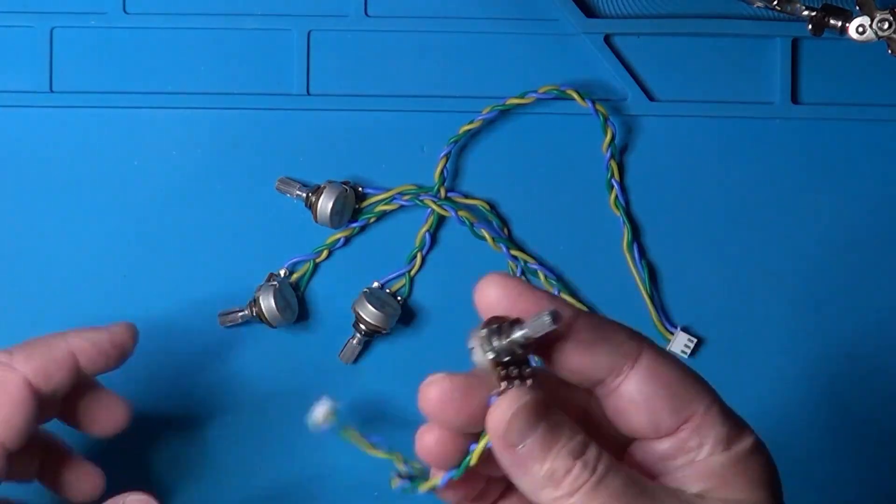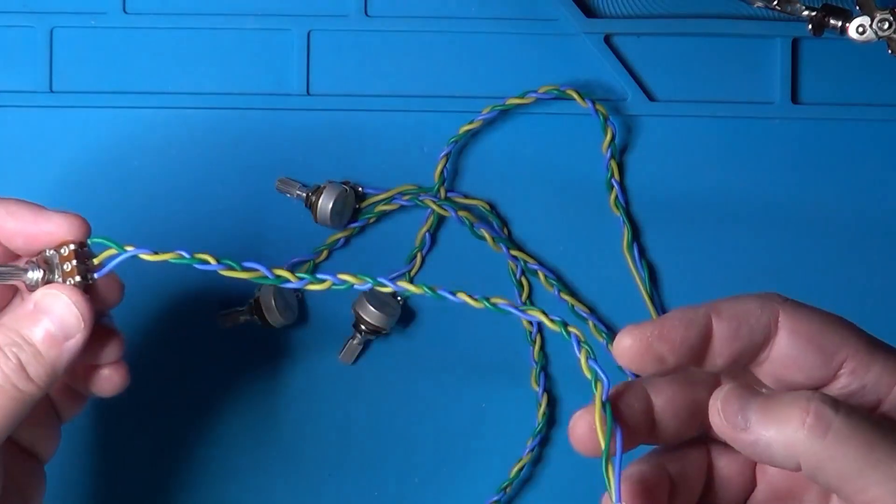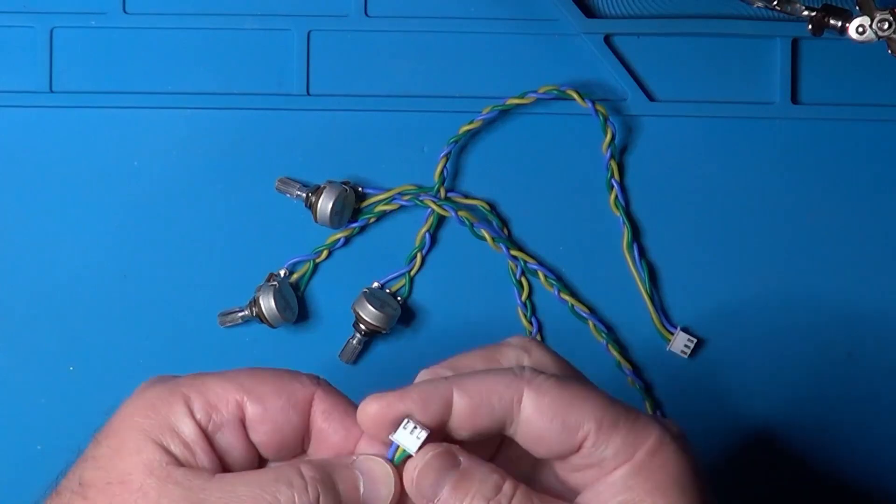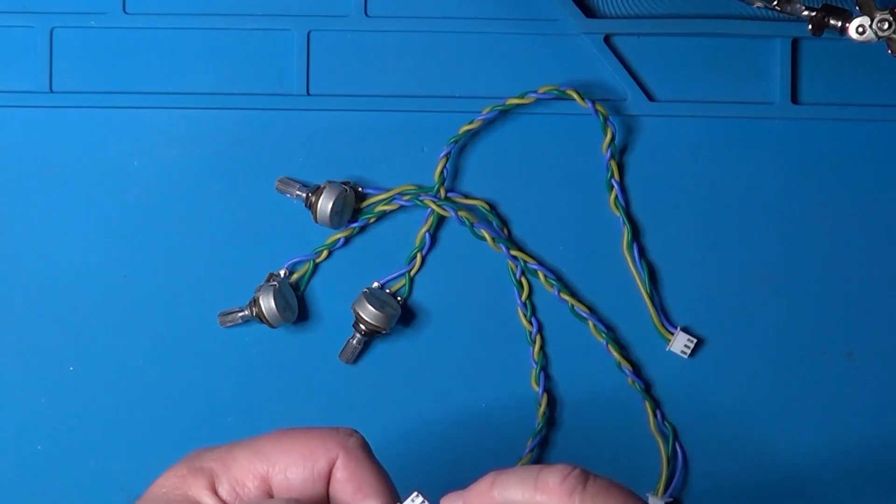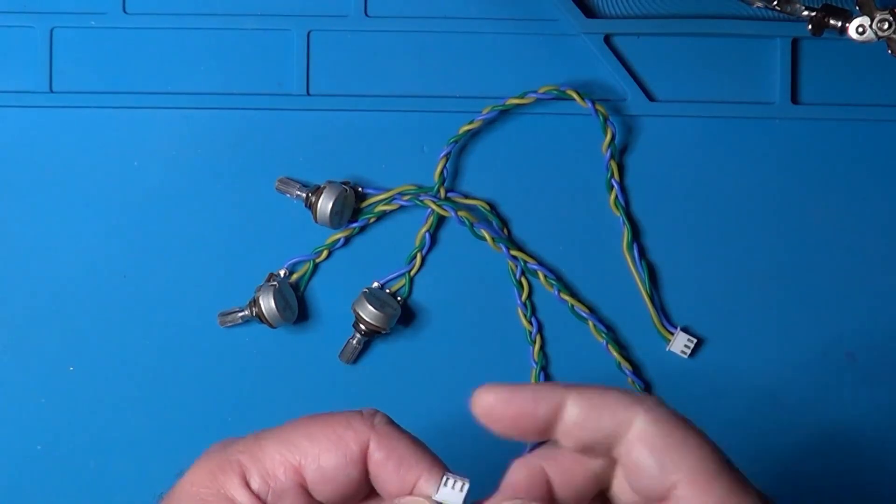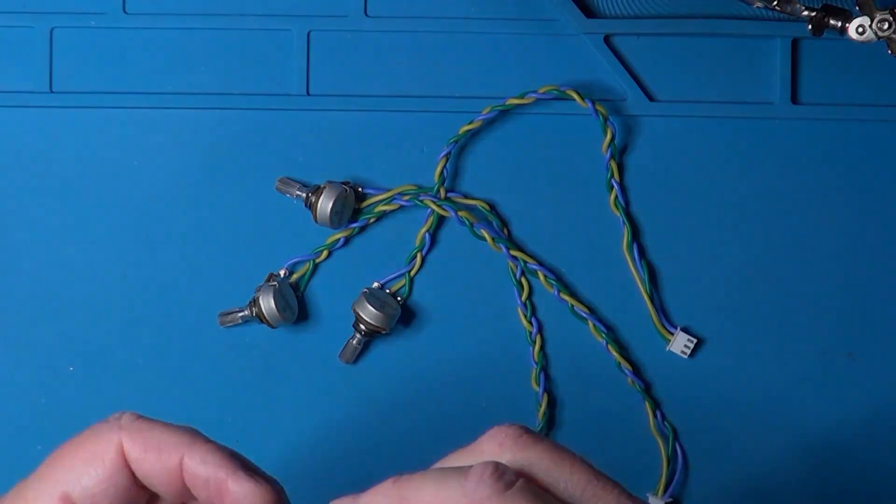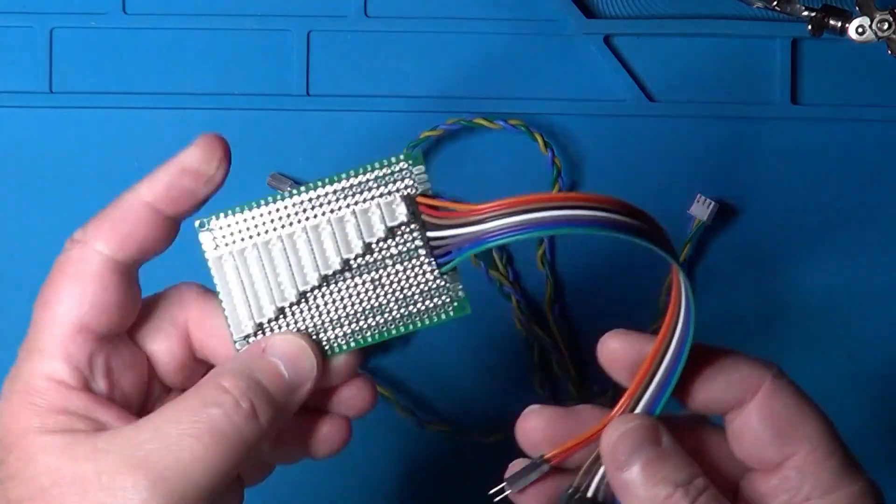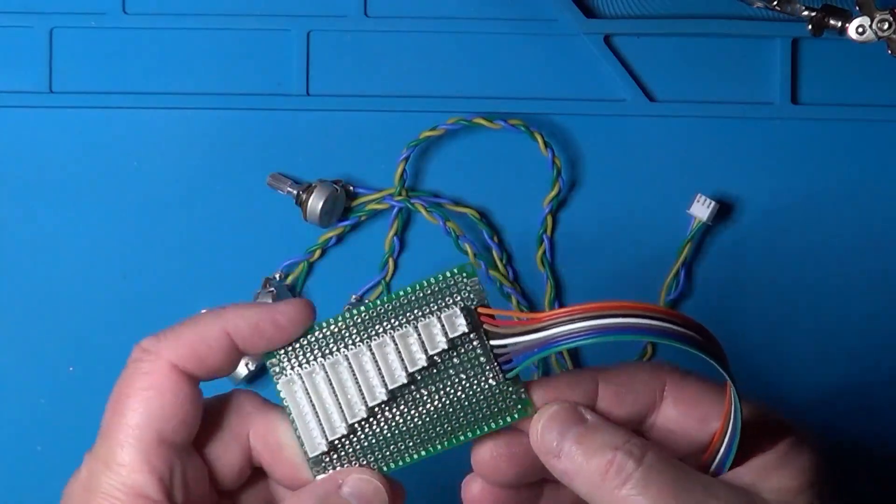However, before installing the potentiometers on the PCB, it is better to check that all the connections are correct. Especially with the assembly of the pins, given that they are very small, it is easy to make a mistake causing the electrical connections to fail. So to help test all the potentiometers and their connectors, I created this simple device.